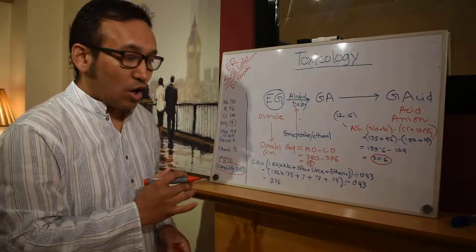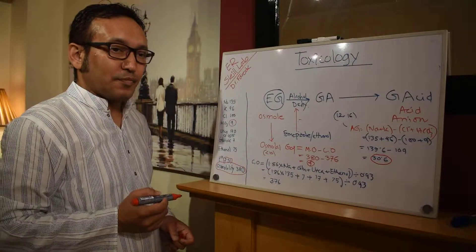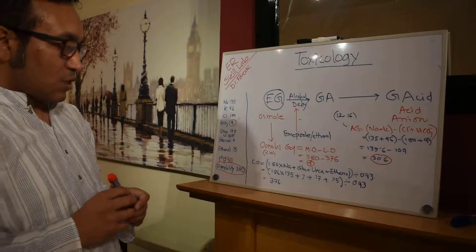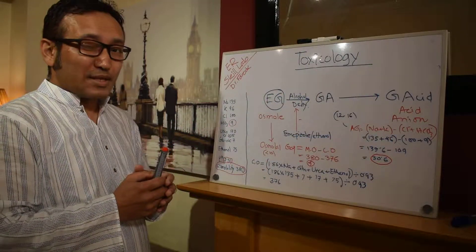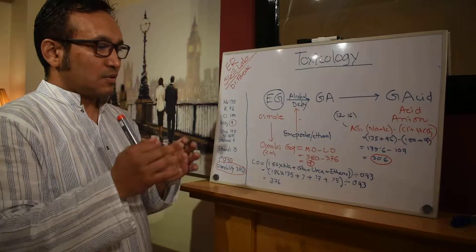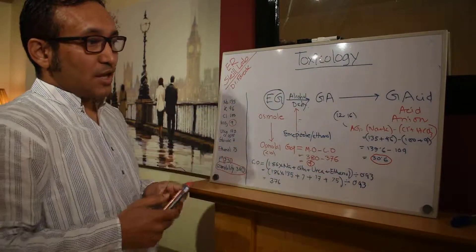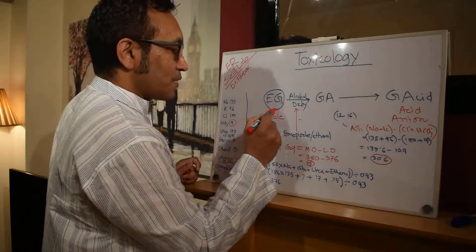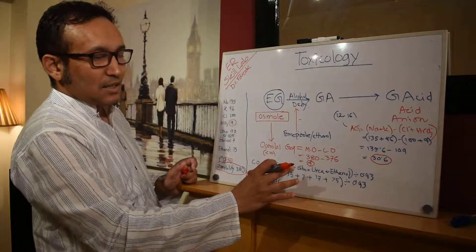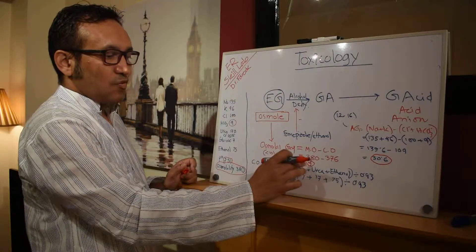With normal osmolality gap which is 4. So the question is yes we've done the calculations, what is the final treatment? By these calculations you've already seen that patient is not in early stage because the osmolality gap is 4.